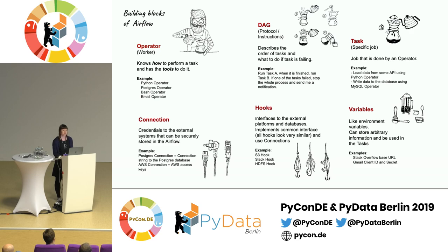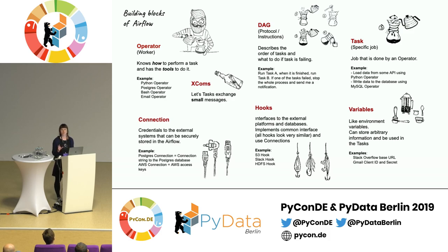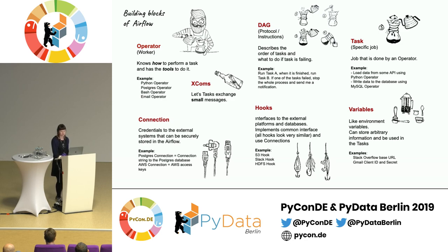One more concept is variables — super simple, just like environment variables: arbitrary chunks of data that you might need to store. And the very last one is XCom, which stands for cross-communication between tasks. If you follow best practices, your tasks should be independent or idempotent and not share any state. But sometimes you need to share a little bit of data between tasks, and XCom is the tool to do that — and you'll see today how one might use it.